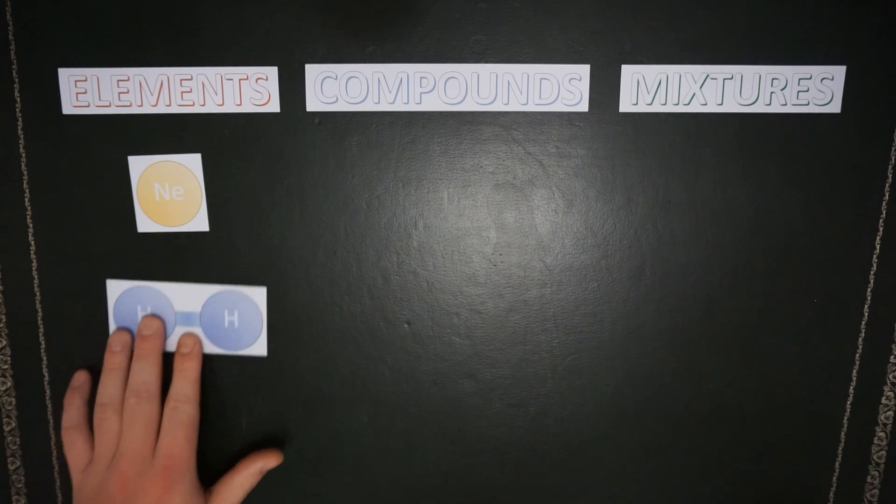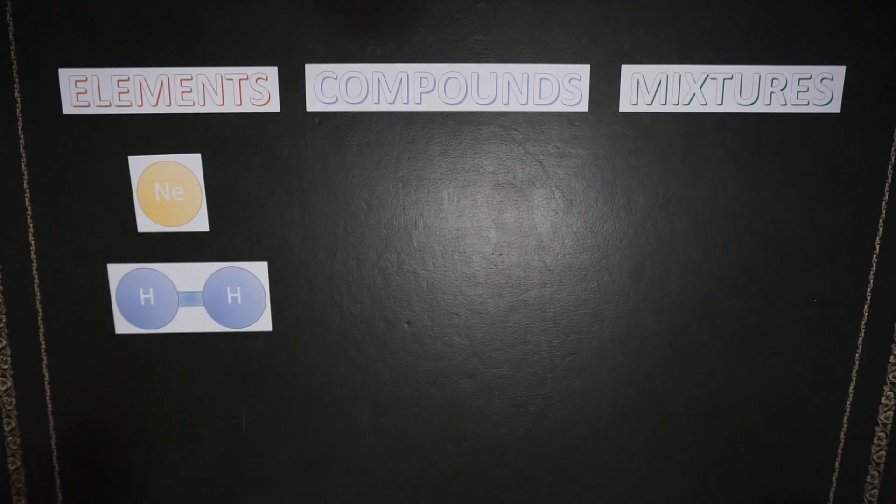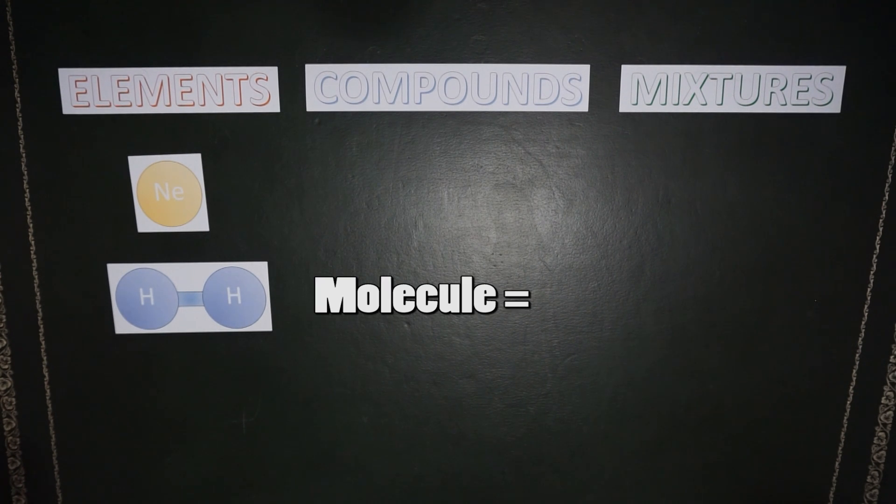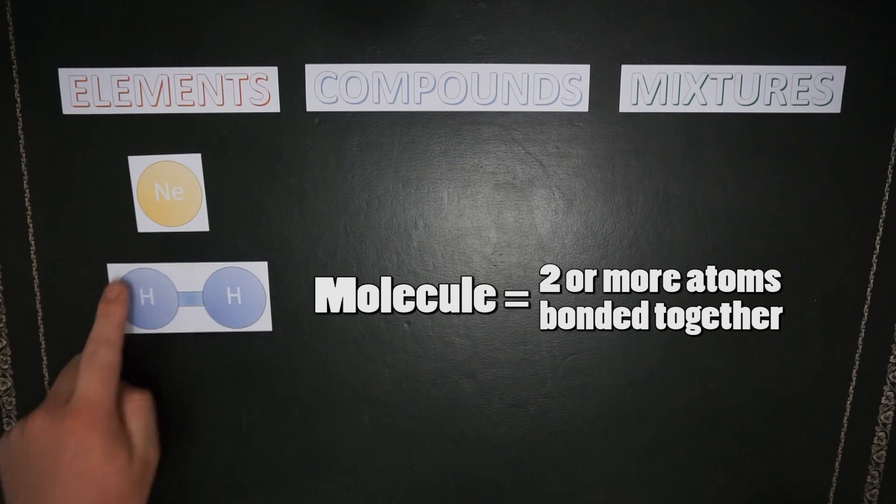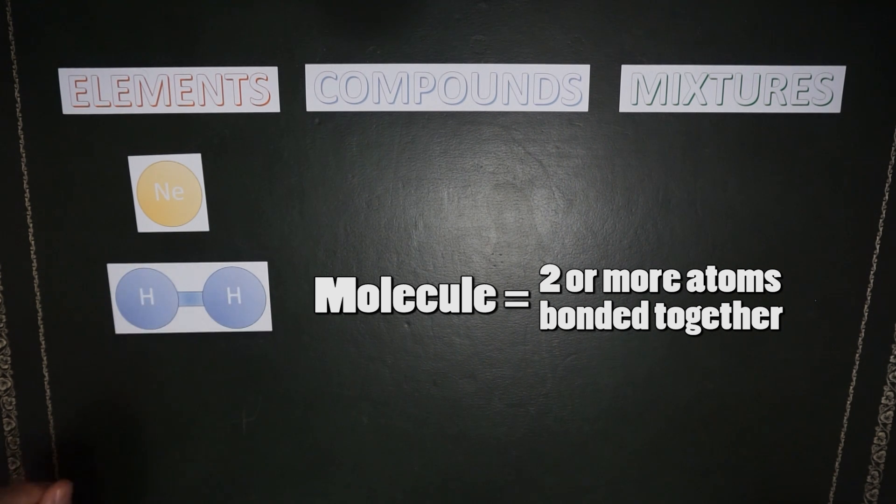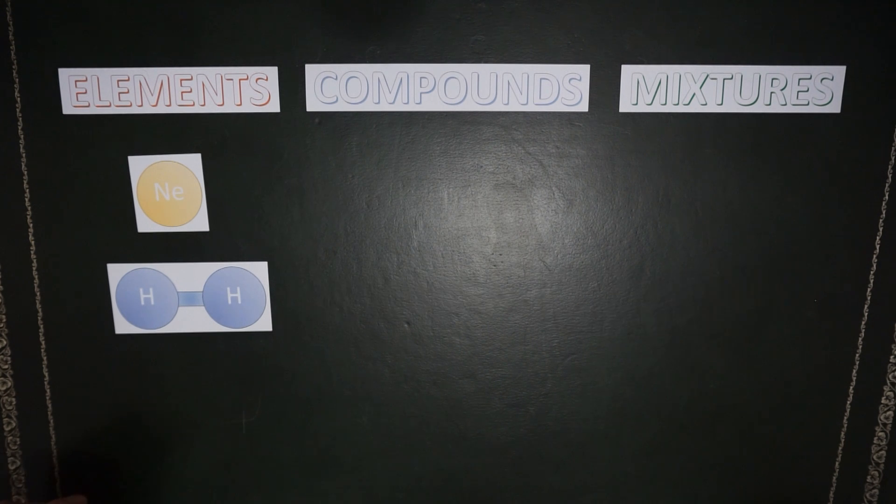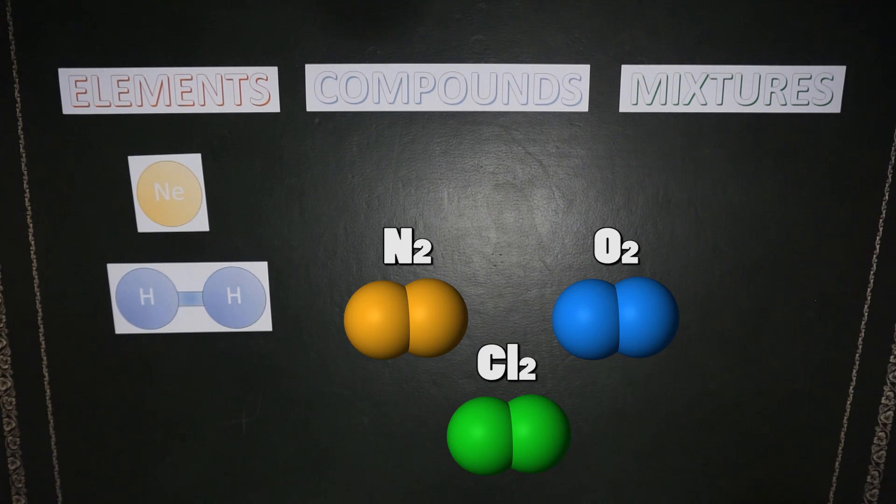Some elements prefer to hang out as a pair or as a cluster of the same type of atom. We call these molecular elements because a molecule is when you have two or more atoms stuck together. For example, hydrogen likes to hang out as a pair of hydrogen atoms, so we call that a molecular element. Nitrogen, oxygen, and chlorine also like to form pairs, so they are also molecular elements.